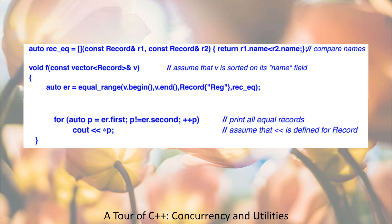auto rec_eq = [](const Record& r1, const Record& r2) { return r1.name < r2.name; };  // compare names

void f(const vector<Record>& v) {  // assume that v is sorted on its name field
    auto r = equal_range(v.begin(), v.end(), Record{"reg"}, rec_eq);
    for (auto p = r.first; p != r.second; ++p)  // print all equal records
        cout << *p;  // assume that << is defined for Record
}